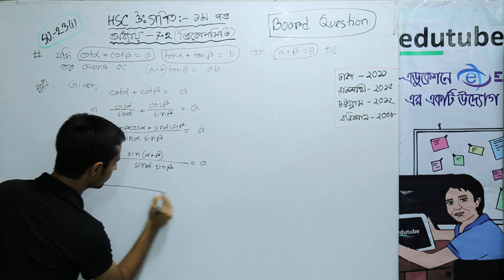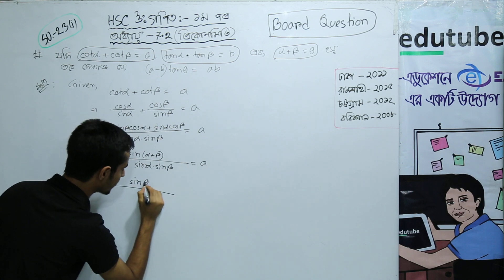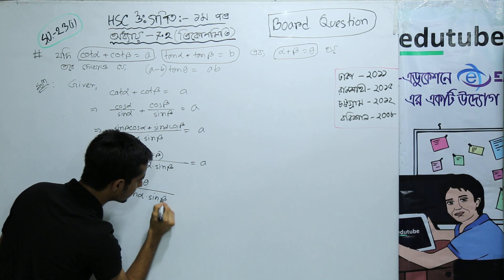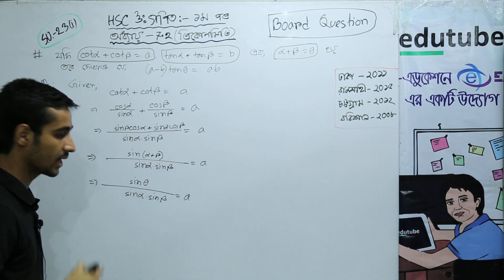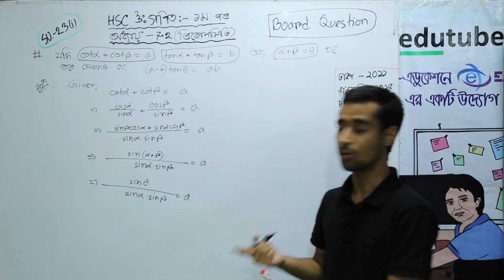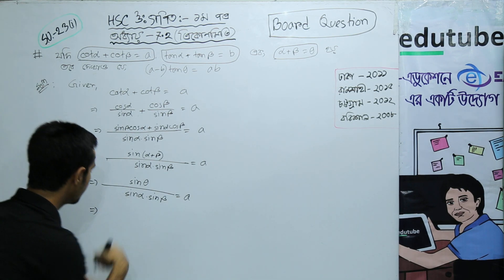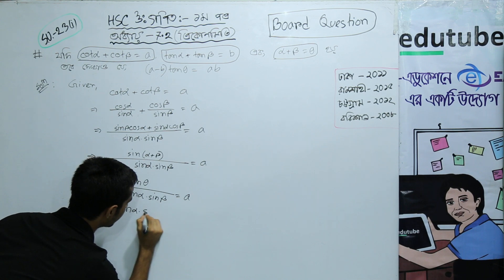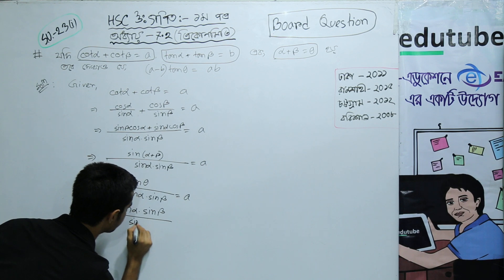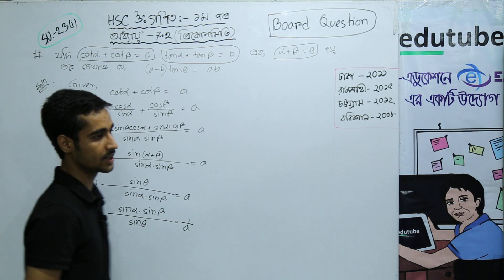Since α + β = θ, we have sin θ divided by sin α·sin β equals A. Rearranging, sin α·sin β divided by sin θ equals 1/A.